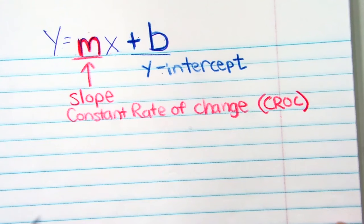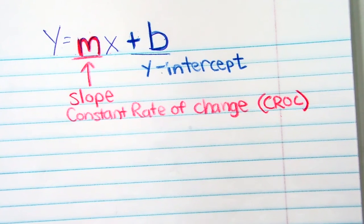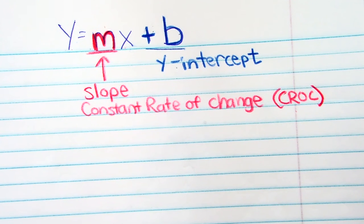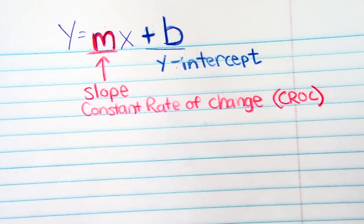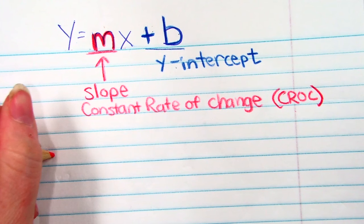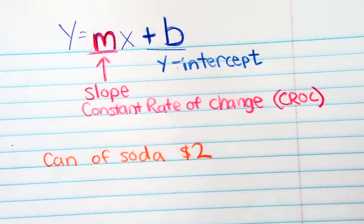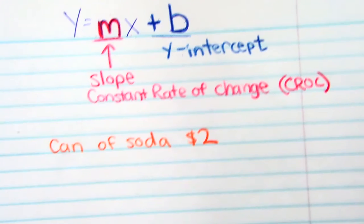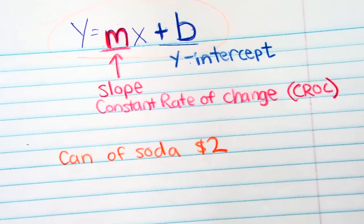The y-intercept is where our graph is going to start — where it crosses the y-axis. So if you were given a word problem, it'll give you the slope and the y-intercept. For example, if I want to go to the store — let's say Costco — and I want to buy cans of soda, and a can of soda costs $2, I want to write an equation that represents this relationship.